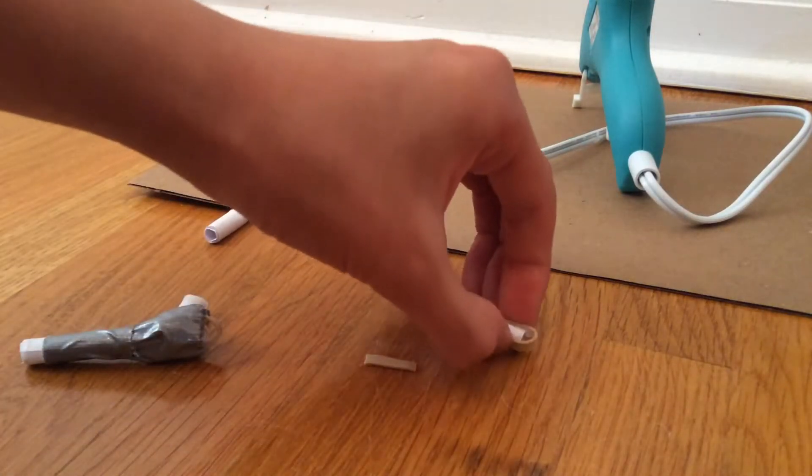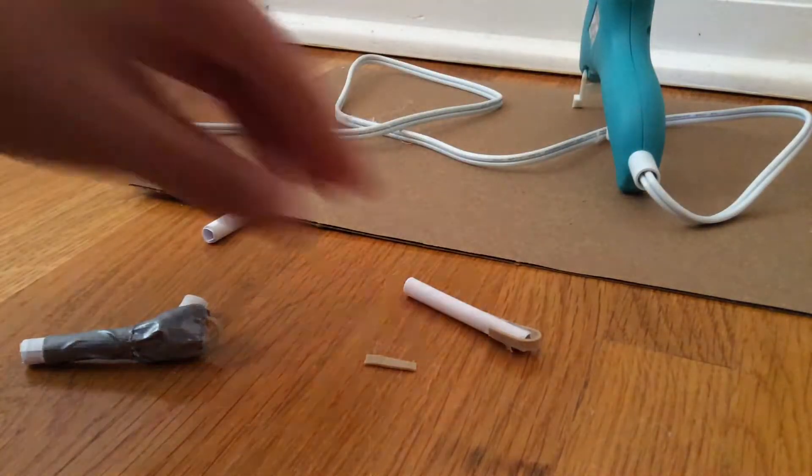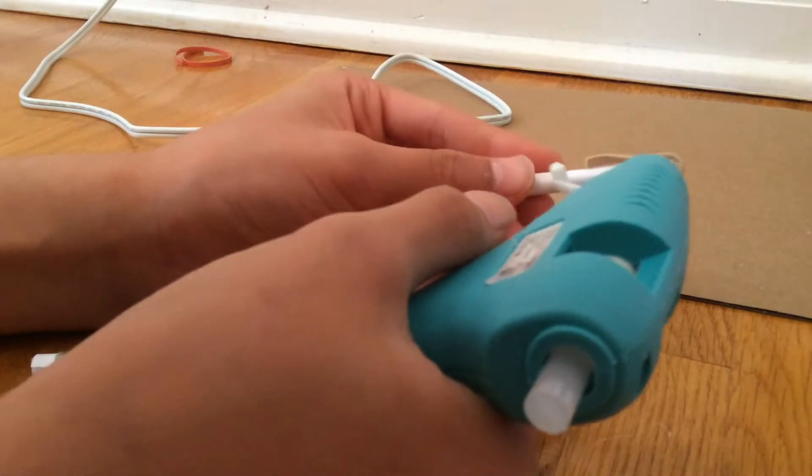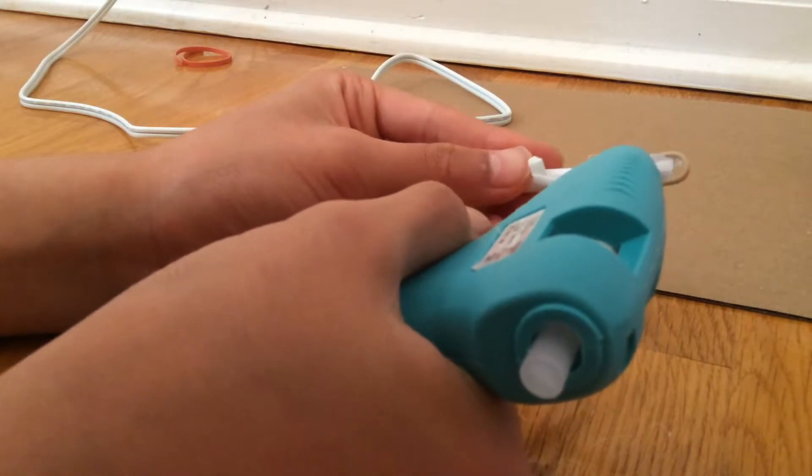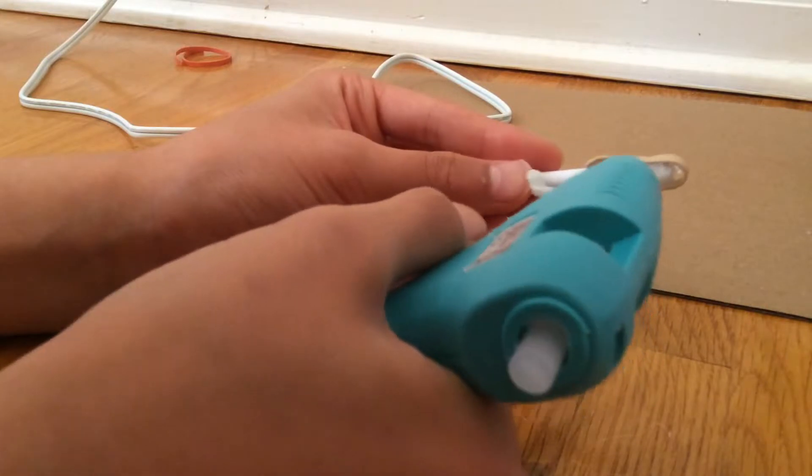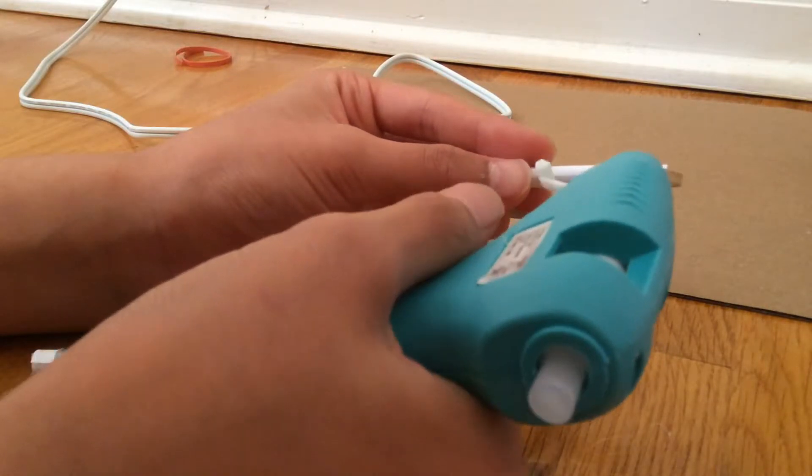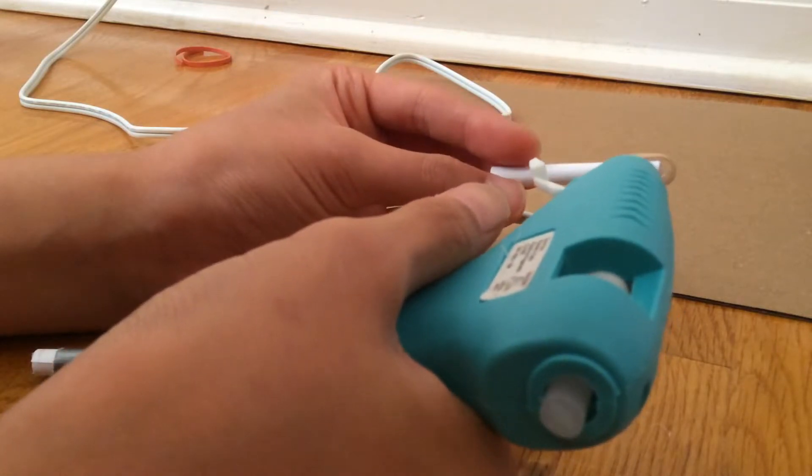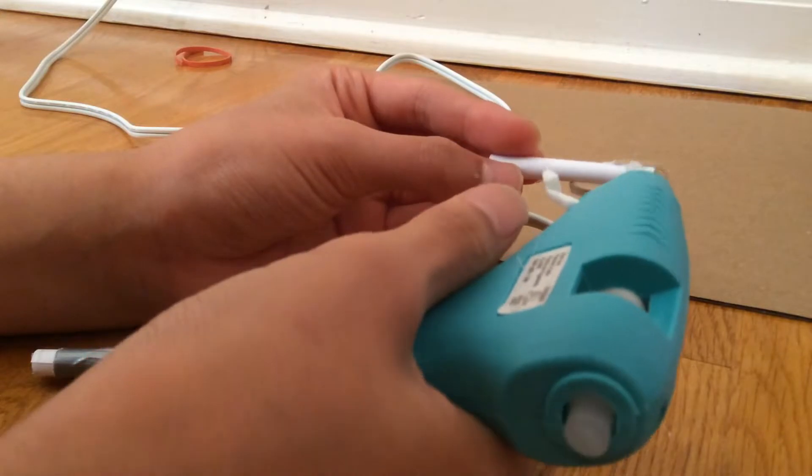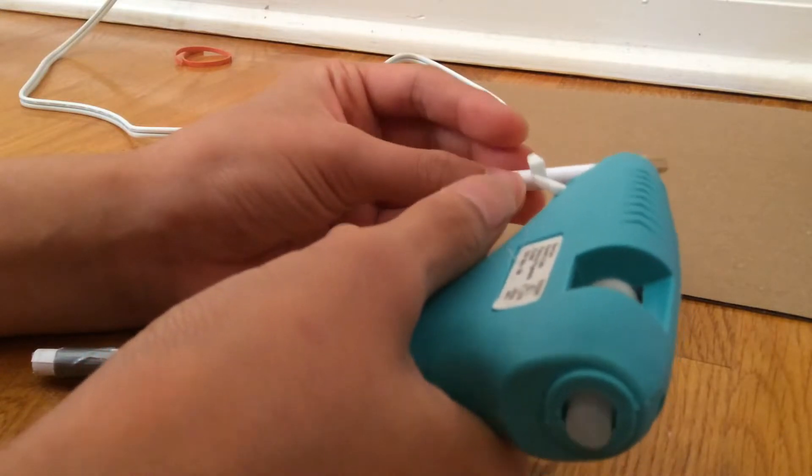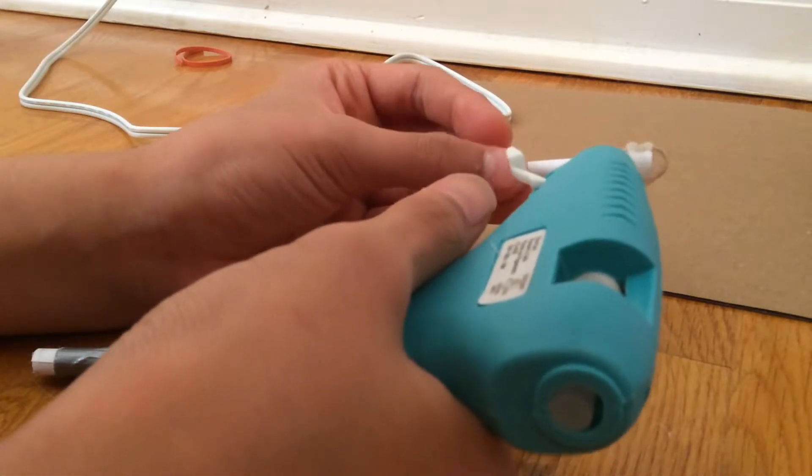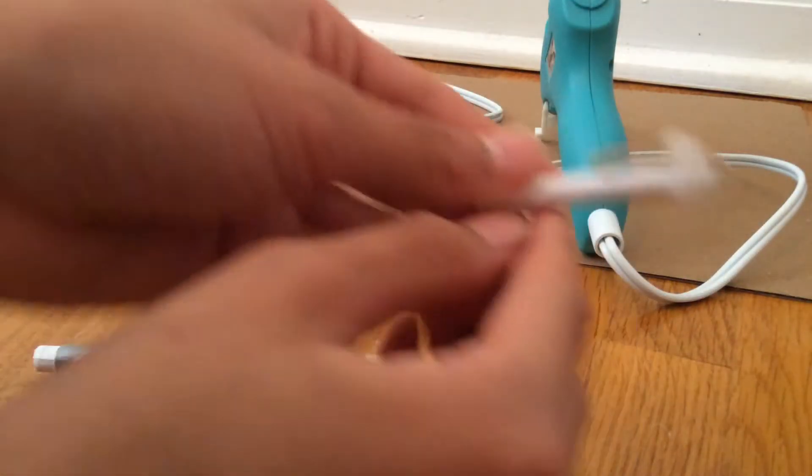Okay, now what you want to do is get the hot glue gun again and just strengthen this whole part in general. So I'm going to put hot glue here, here, here, all around to make sure the rubber band does not come off when you're shooting the gun. Be generous with the hot glue and then wait for this to dry.